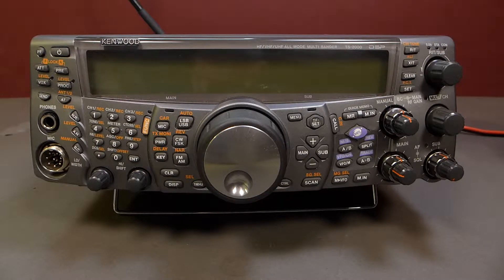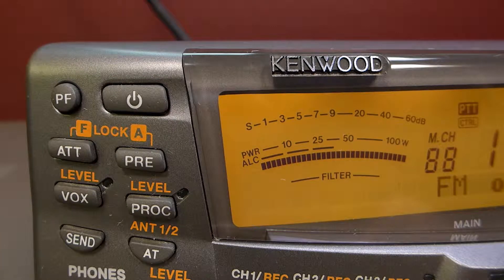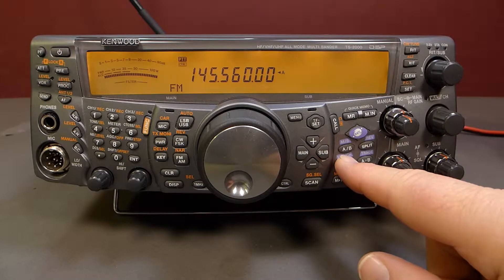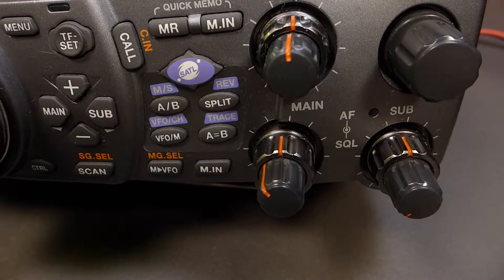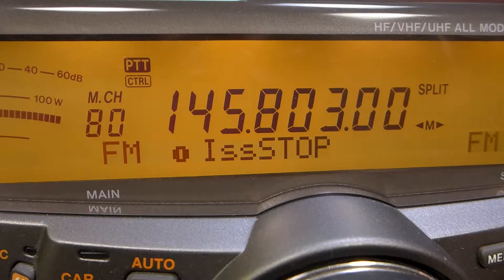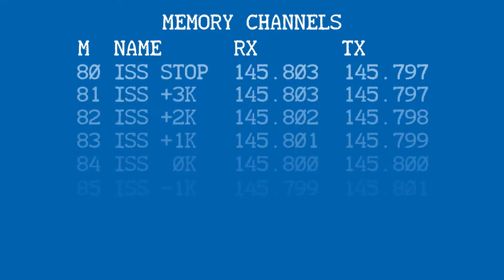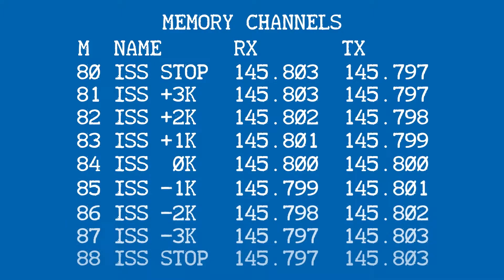Let's look at the TS-2000 to see how we accomplish the task of frequency adjustment. Turn the radio on by momentarily pressing the power button. We need to be in the memory mode, so push the VFO/M button. You'll see a memory channel number appear, and the display will show the frequencies and channel name. This example starts with memory channel 80. Here is a table of channel numbers, their names, and the frequencies. The memory channels change in one kilohertz steps.